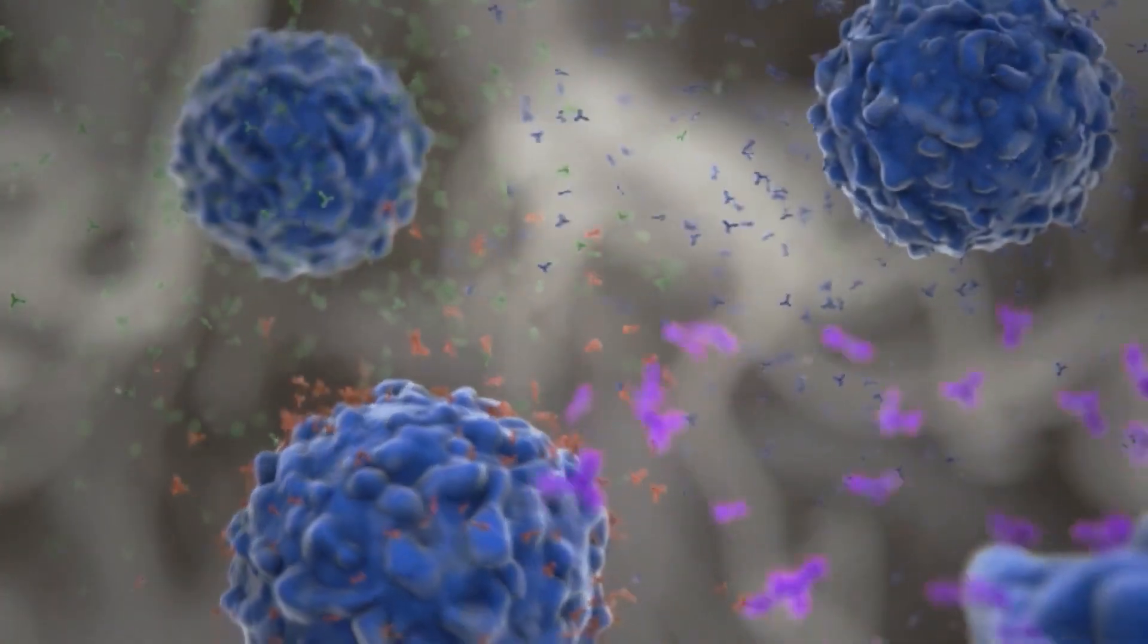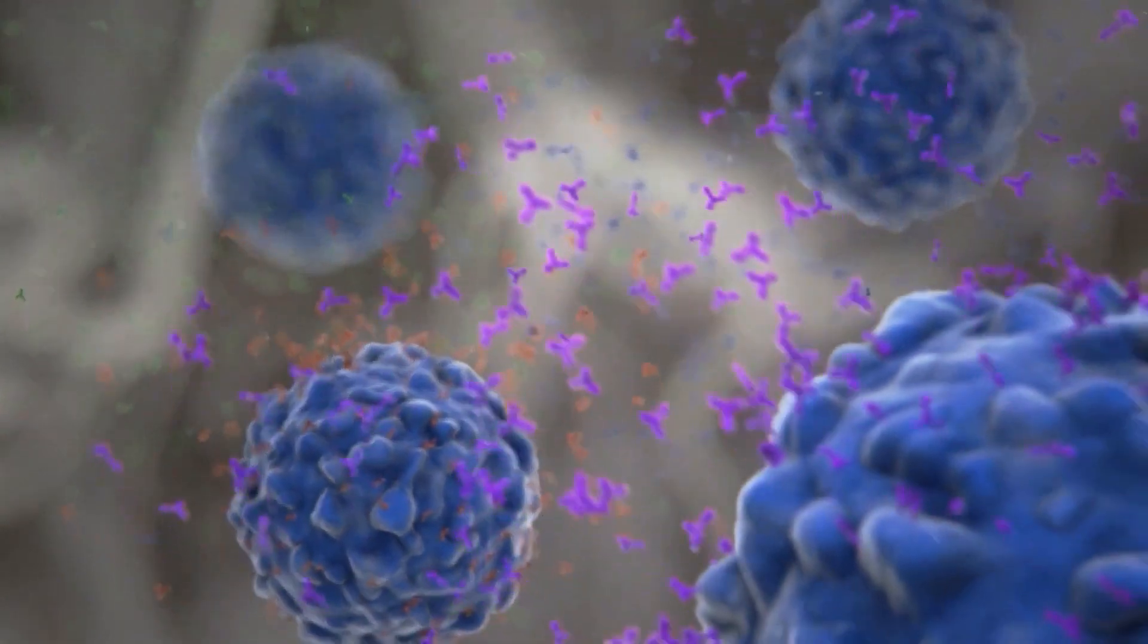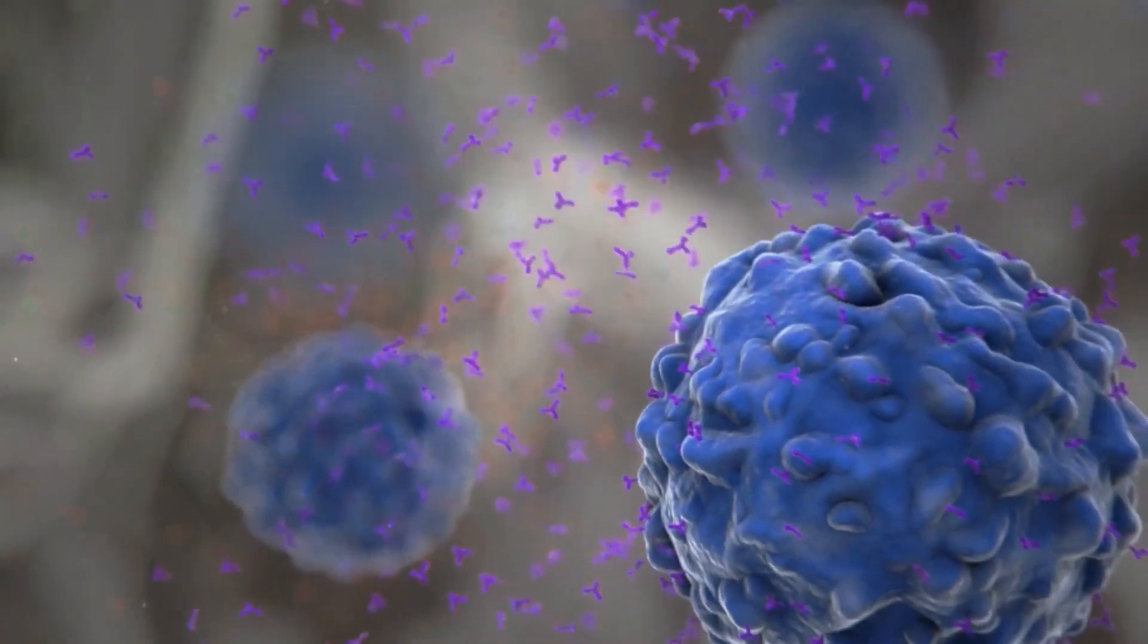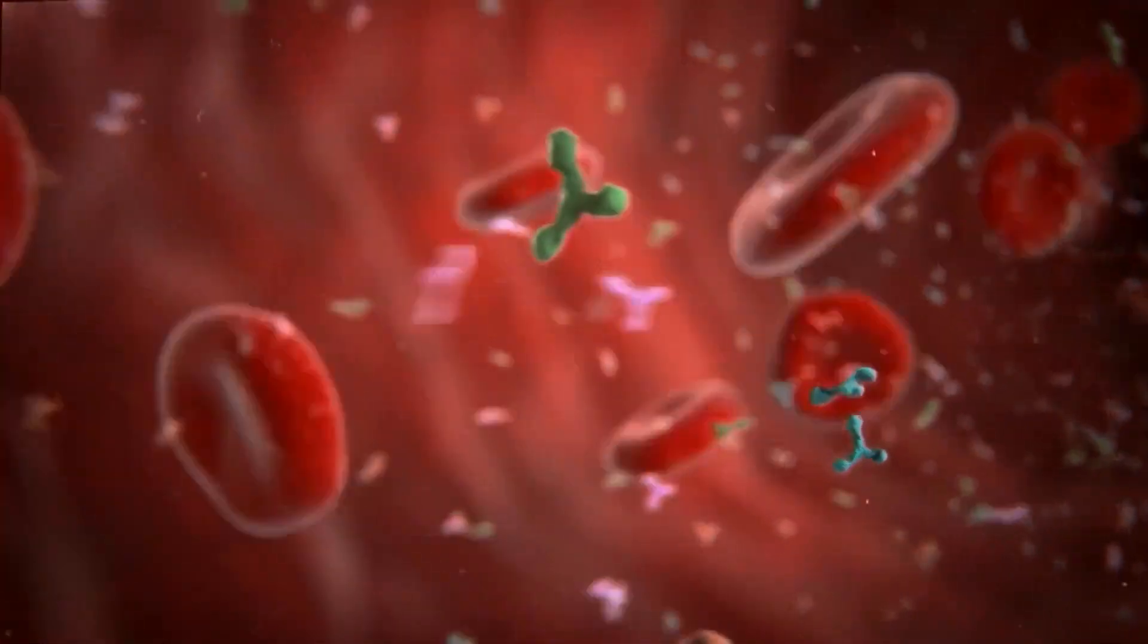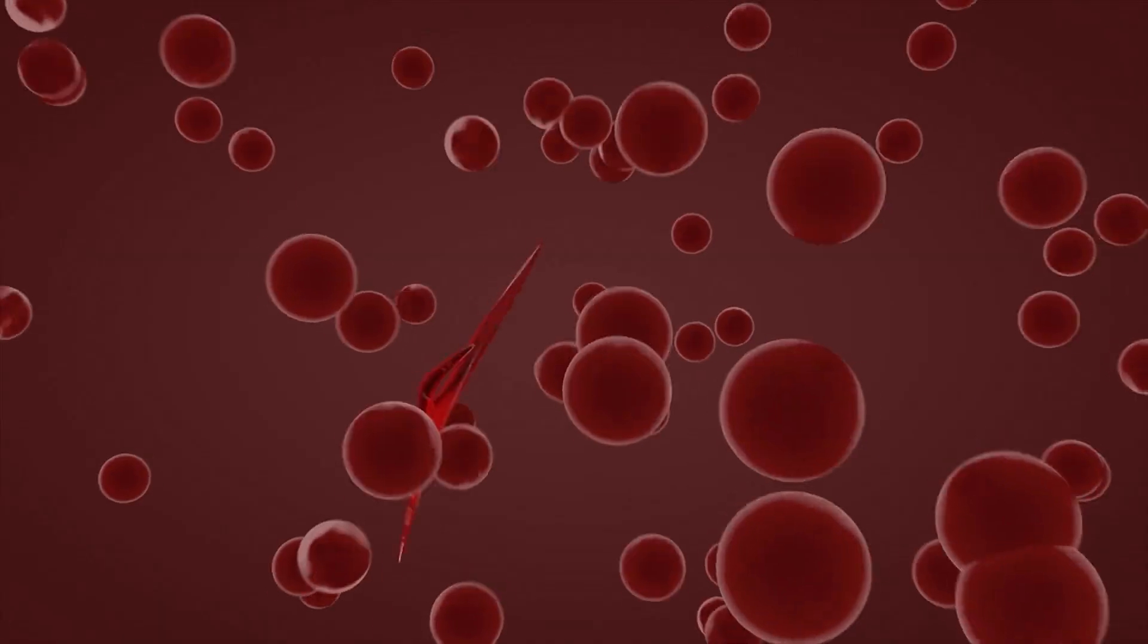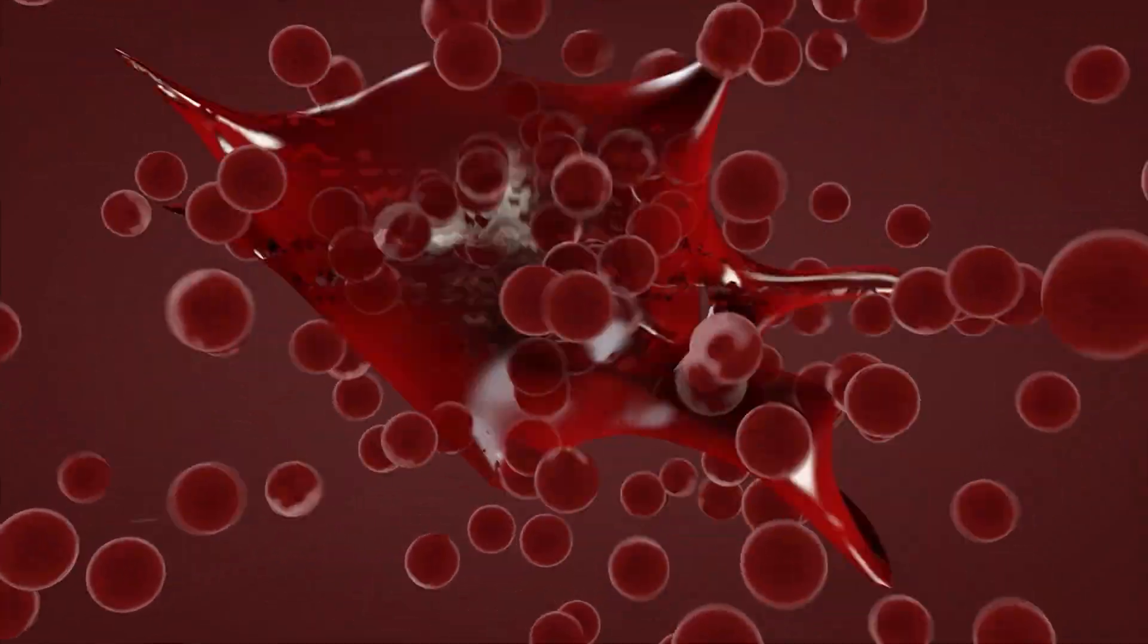The difference between antibodies and transfer factors is that antibodies can only alert the immune system if the pathogen has characteristics exactly like the characteristics carried by the antibody. Transfer factors do not have to be an exact match and can alert the immune system if the characteristic is anywhere close.